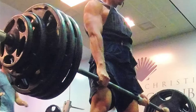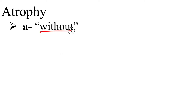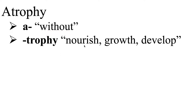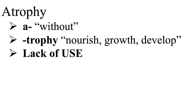Now let's have a look at atrophy. The prefix 'a' means without. Trophy again means nourish, growth, and development. So atrophy then is without muscle growth or development. In other words, this is the absence or loss of muscle mass or muscle size, usually due to the lack of use of the skeletal muscles.